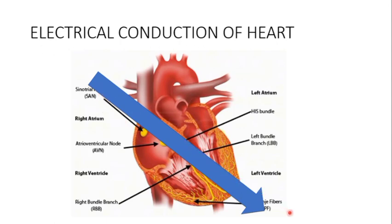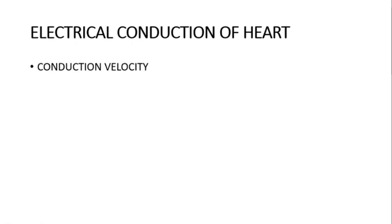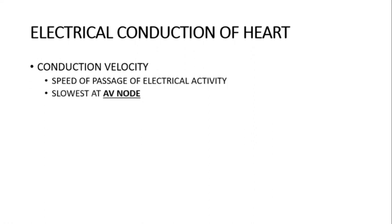The normal direction of passage of current is downwards. If there is any deviation in this, there could be a problem. Now let's talk about conduction velocity — the speed of passage of electrical activity. The electrical activity passes from SA node to AV node to bundle branches and Purkinje fibers. The speed of passage is slowest at the AV node, and there is a reason for this.